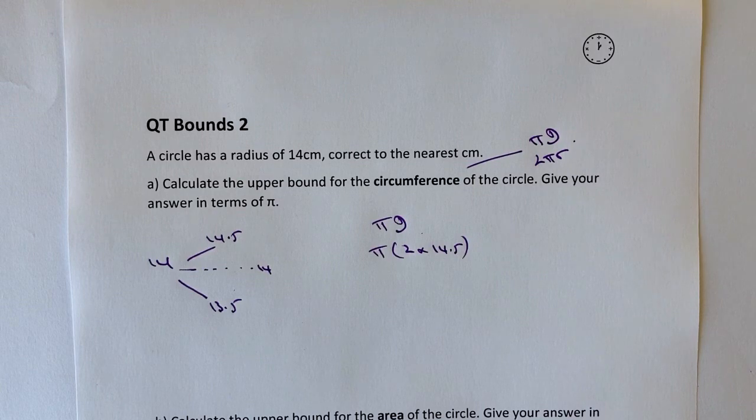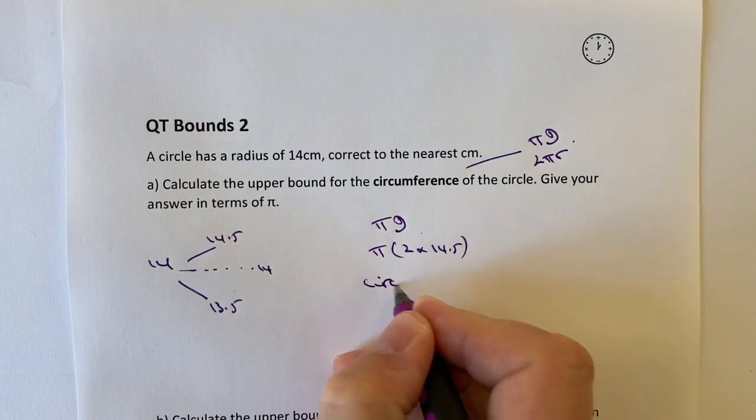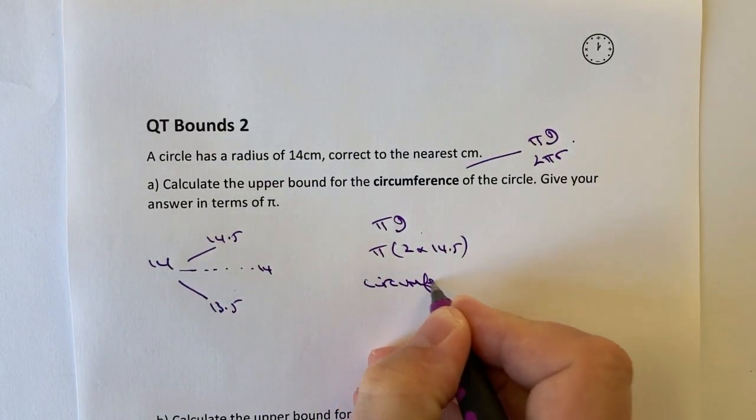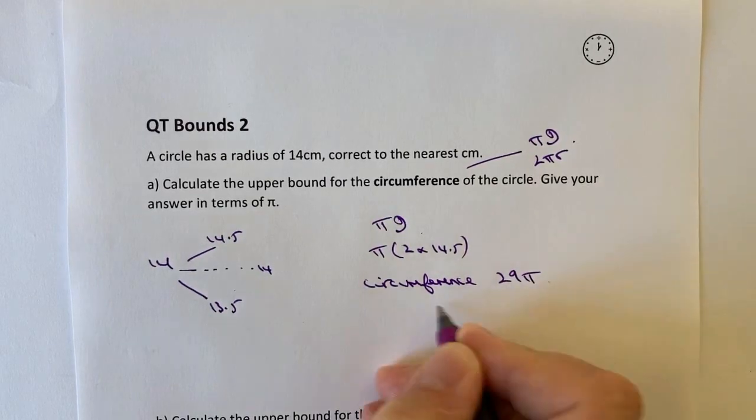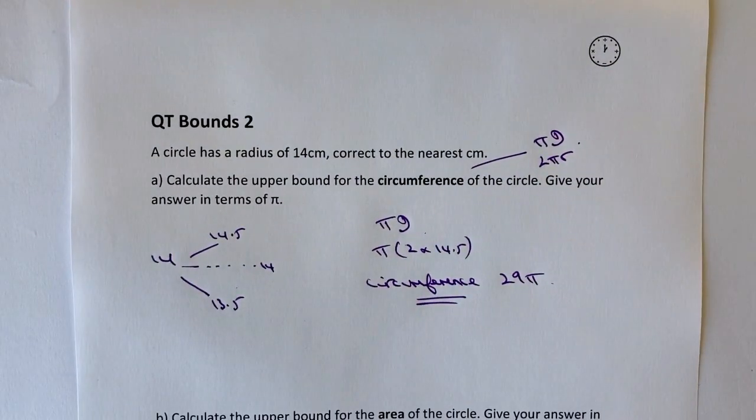So it says give your answer in terms of π. Well, in terms of π, the circumference is going to be 29π. So just in terms of π, it means that we don't need to calculate that any further.